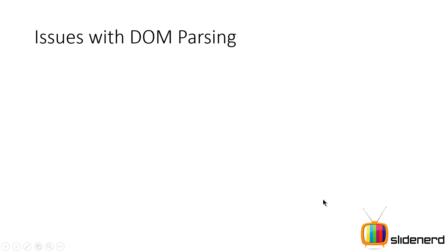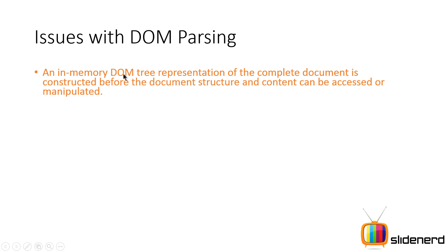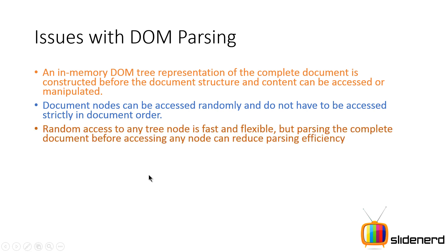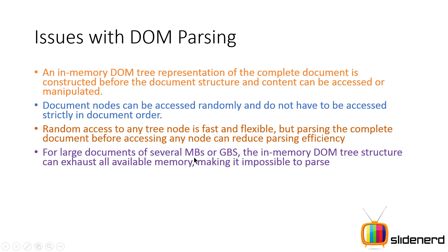Now let's look at issues with DOM parsing. First, the entire document needs to be loaded into memory before you can start working with it. If it's a small document that's fine, but if it's a huge document there's gonna be trouble. Document nodes can be accessed randomly — that's a good thing. It's fast and flexible, but parsing the entire document can reduce efficiency. If you're downloading MBs or GBs of data, your Android device will definitely run out of memory, which is one reason DOM parsing is not commonly used in Android.